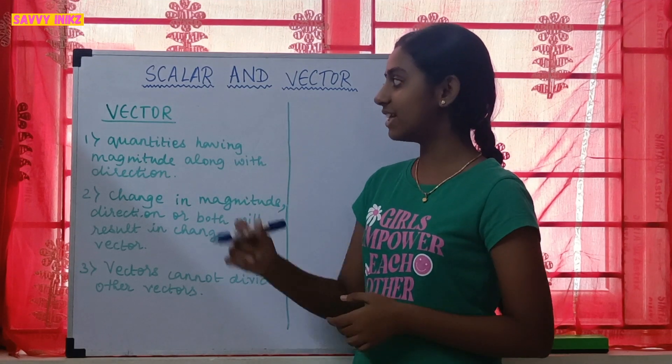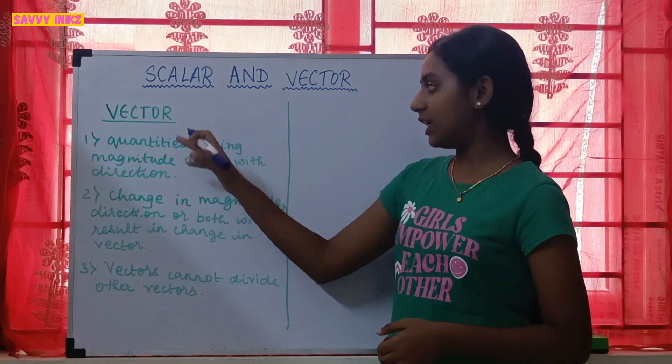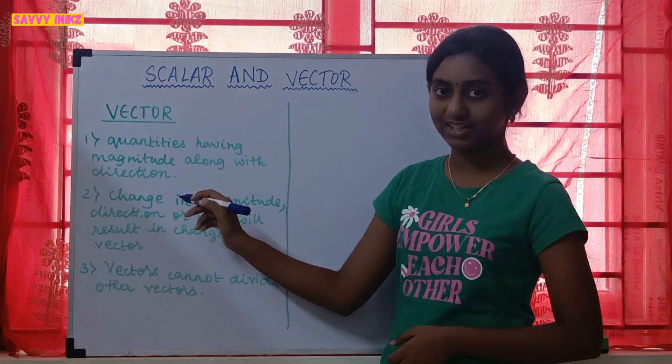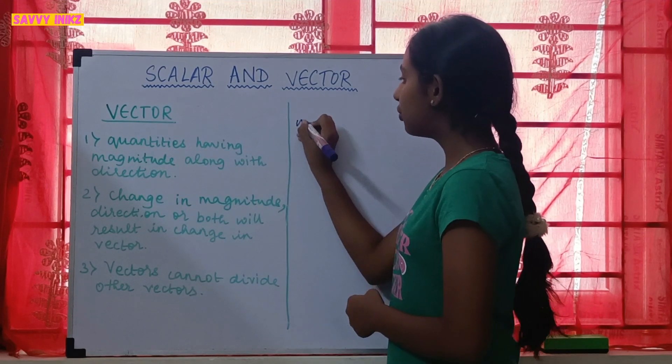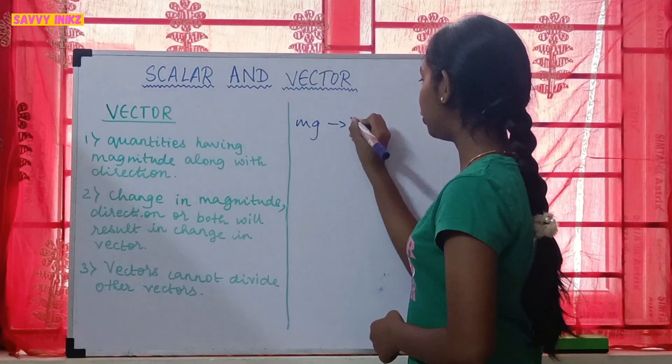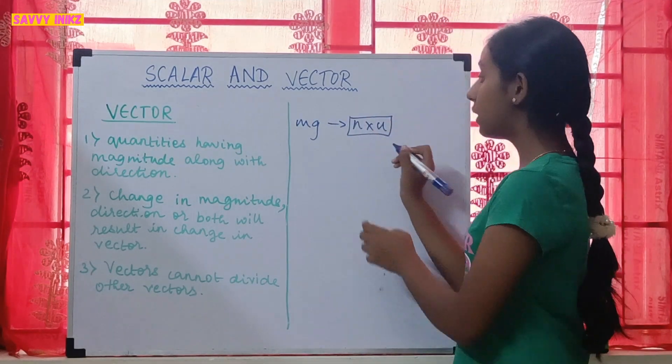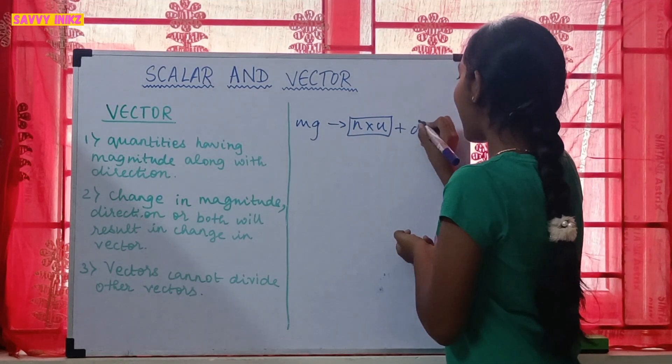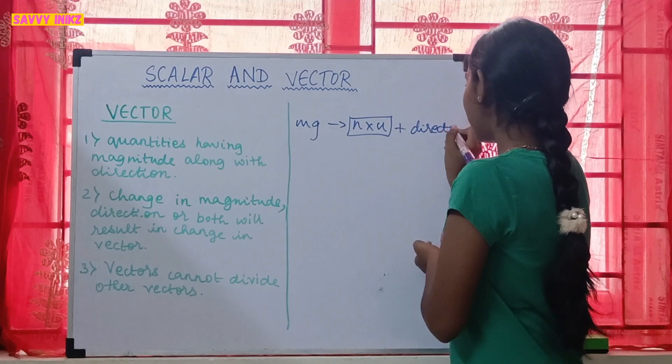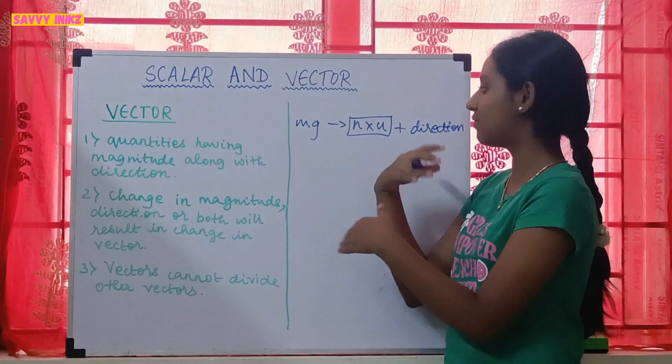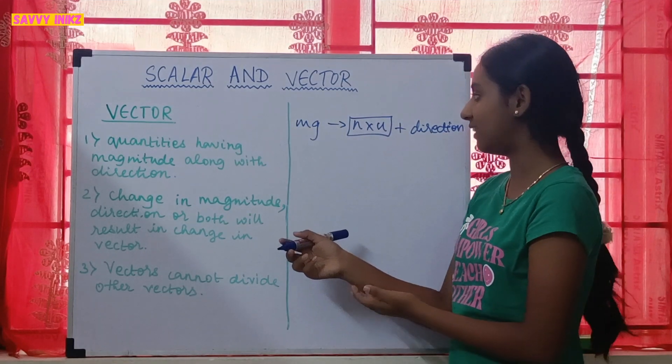So now let's learn about vector quantities. Vector quantities are the quantities having magnitude along with direction. So we already know magnitude as numerical value multiplied by unit. Now we have to add one more thing to form a vector quantity which is direction. So direction is an important part of a vector quantity. It's like a significance which we are adding to form a vector quantity.